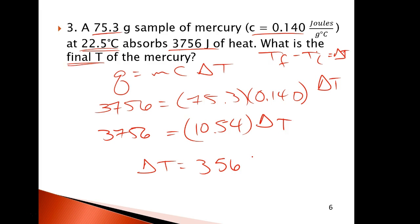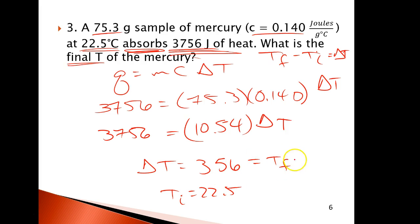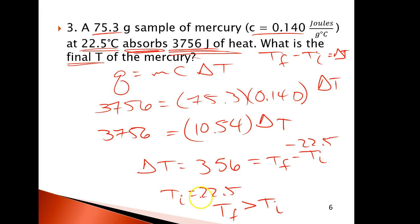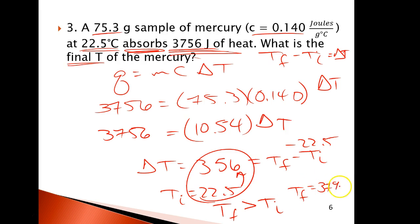Now I think about it: I added heat, T-initial is 22.5. You can do the algebra — 356 equals T-final minus T-initial — or you can reason that if you're adding heat, T-final is going to be greater than T-initial. It's going to increase by 356 degrees. So T-final is 22.5 plus 356, which equals 379 degrees C.